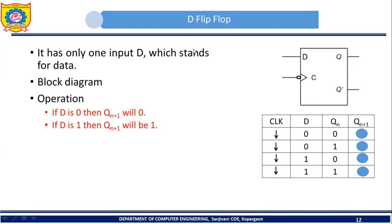It's very simple. As there is only one input, there are two possibilities: either D will be 0 or D will be 1. If D is 0 then the next state of the D flip-flop will be 0, and if D is 1 then the next state of the D flip-flop will be 1.